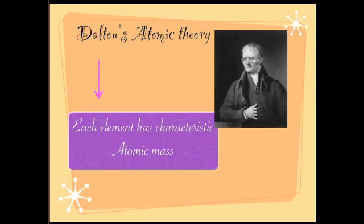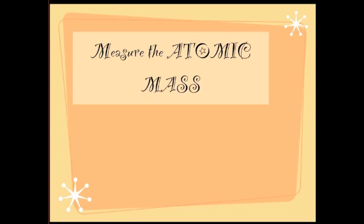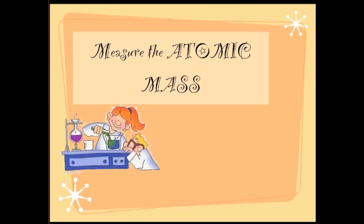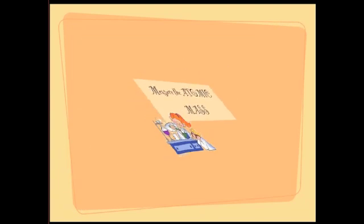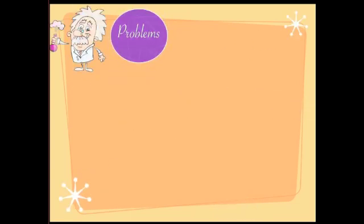Once this discovery was made and the atomic theory was widely accepted, every scientist started to measure the atomic mass. A lot of scientists started experimenting on how to measure it, but it was not that easy — there were a lot of problems. Let's see what major problems came up.